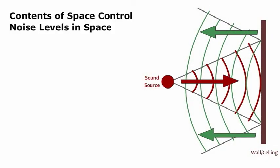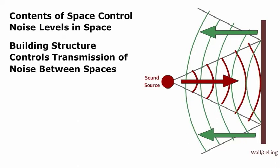The contents of space control the noise levels in the space, while the building structure controls the transmission of noise between spaces.